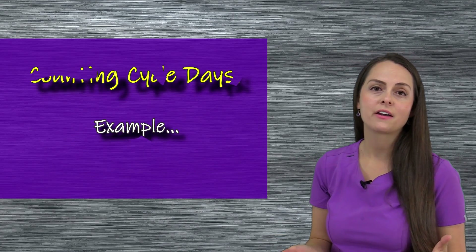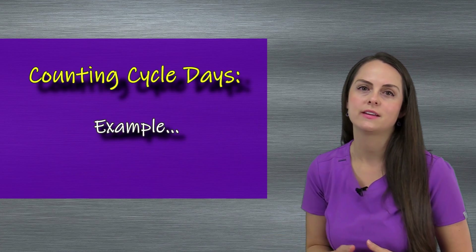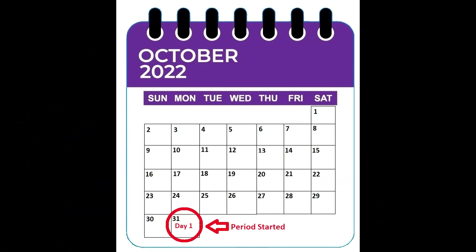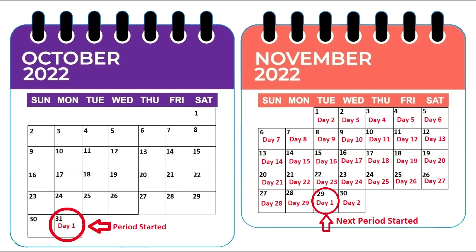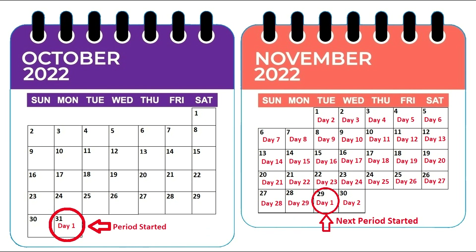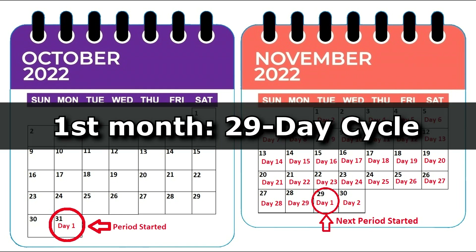To help us understand how to calculate menstrual cycle length, let's do this example. Our first month period started October 31st, and that is cycle day one. We're going to keep counting until November 28th, which is the day before that next period that started on November 29th. This gives us the cycle length for that month of 29 days.